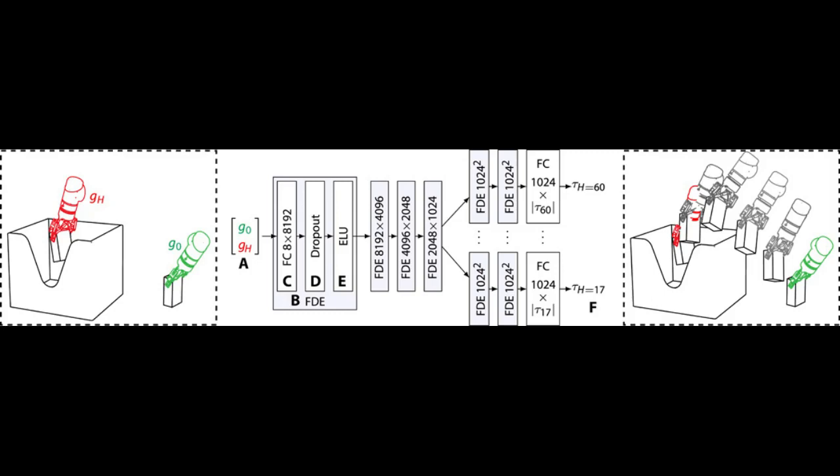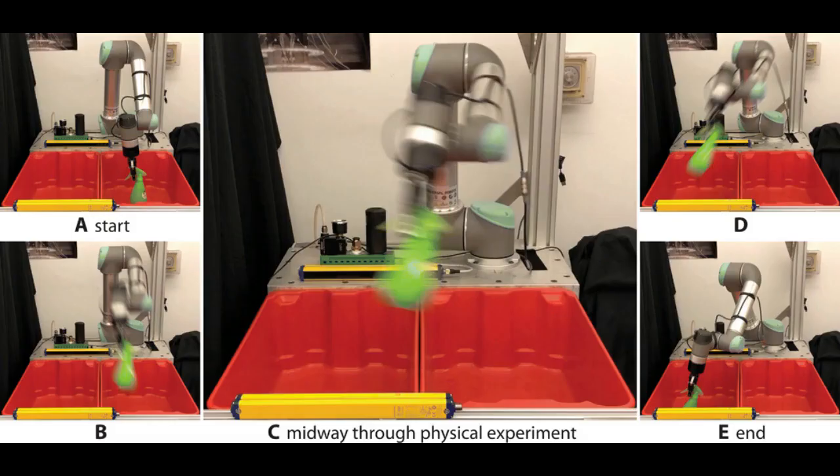The researchers found that the approximation generated by the neural network could then be optimized using the motion planner. The neural network takes only a few milliseconds to compute an approximate motion. It's very fast, but it's inaccurate. However, if we then feed that approximation into the motion planner, the motion planner only needs a few iterations to compute the final motion.